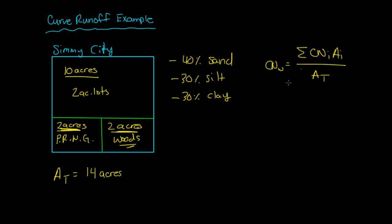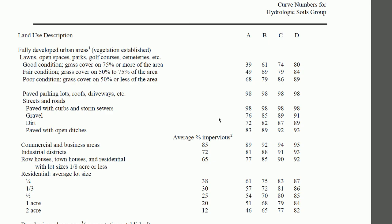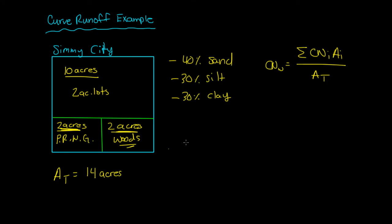In order to figure out what the curve number is, we have to look up these numbers in this chart. But before we even do that, we need to figure out what type of soil group this city belongs to. Is it group A, is it group B, group C, or group D?